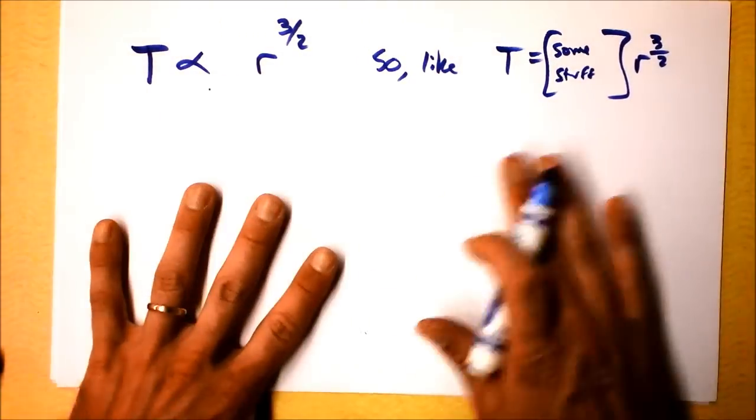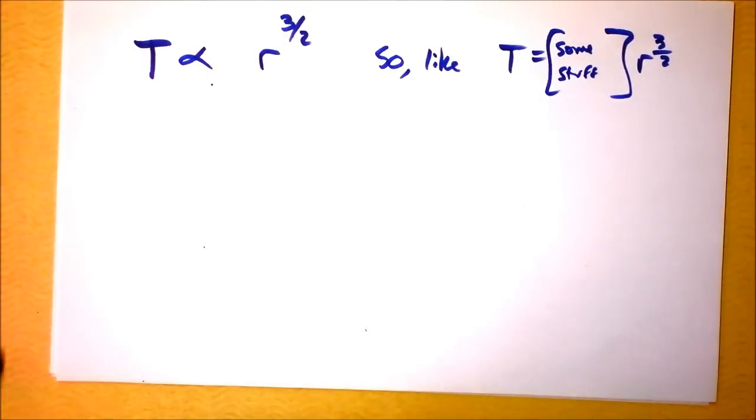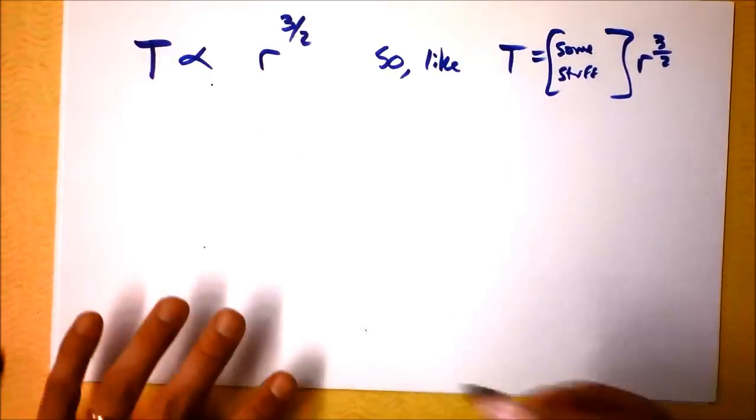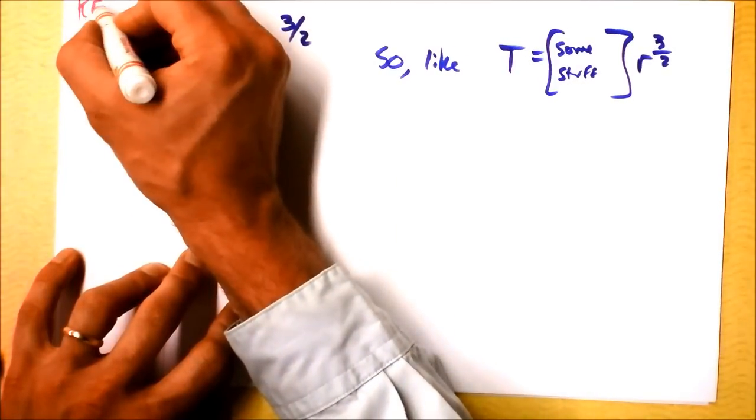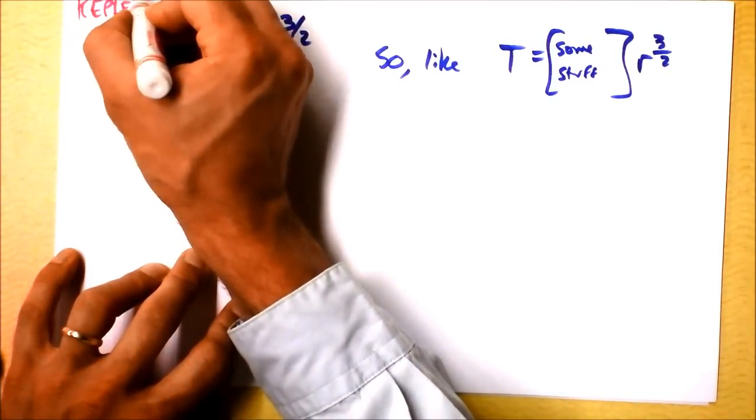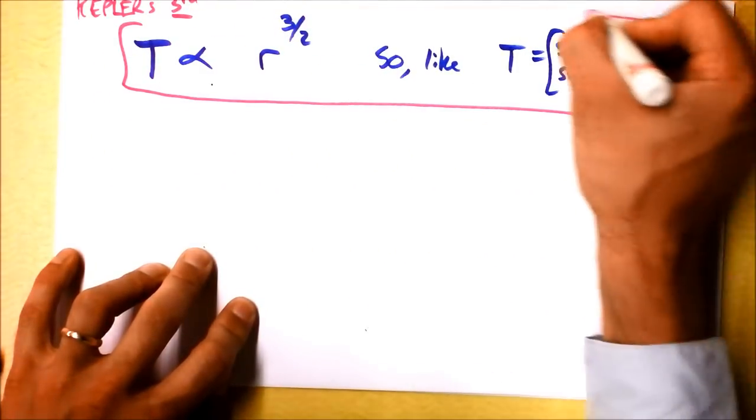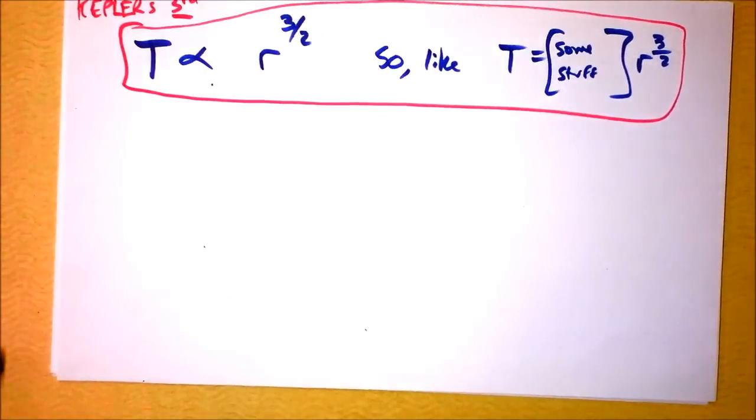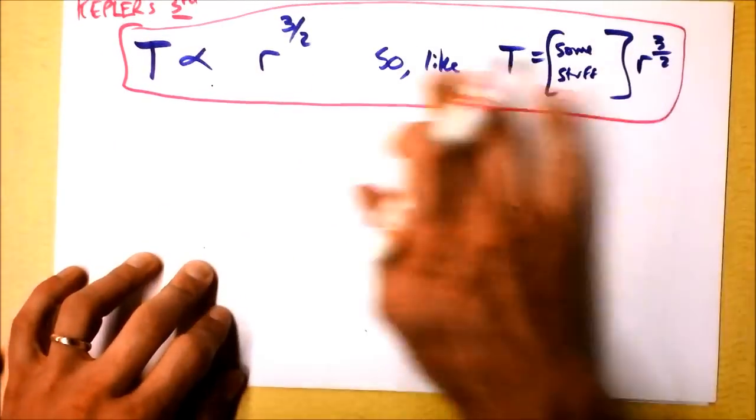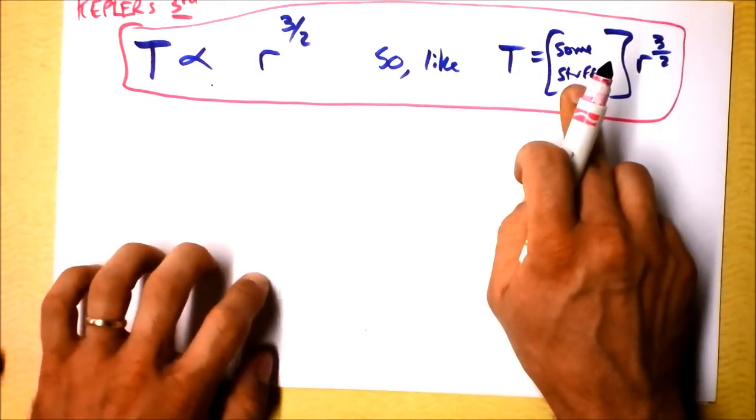Kepler wasn't able to do this, but Newton came along. What was it? 80 years later or something? And Newton says, this is Kepler's third. That was all that Kepler said. Newton came along 80 years later. Maybe not 80 years. Maybe it was just 20 years later. Everybody had accepted this because the data showed this, and no one really knew why, and no one knew what that stuff was.